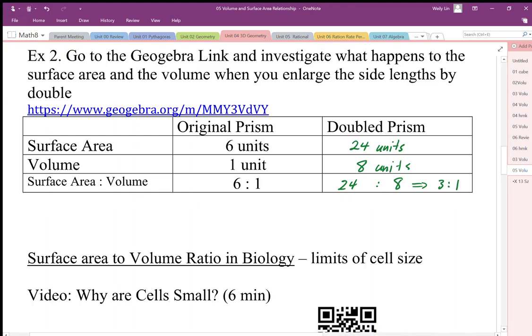When we fill out the chart for the doubling prism, we start with our original prism which we're going to call six units, and it doubles so we have four times the surface area.